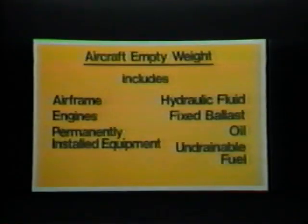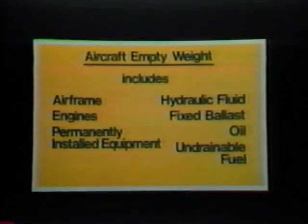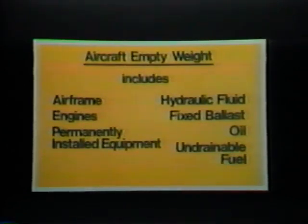First, let's deal with weight. Your plane will have two important weight figures: the empty weight and the maximum take-off weight, sometimes referred to as the maximum gross weight. The empty weight consists of the airframe, engines, and all items of operating equipment that have fixed locations and are permanently installed in the aircraft. It includes optional and special equipment, fixed ballast, hydraulic fluid, and undrainable residual fuel and oil.